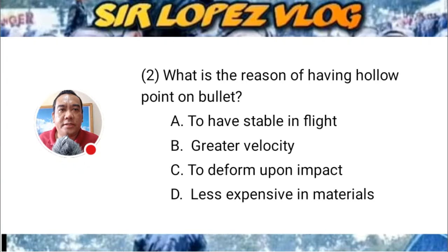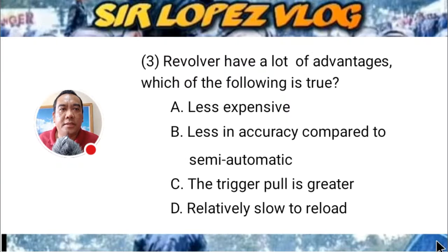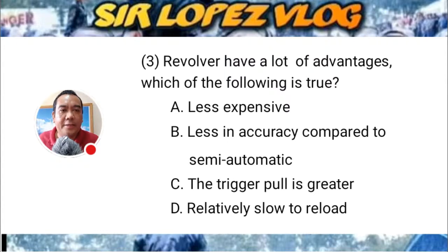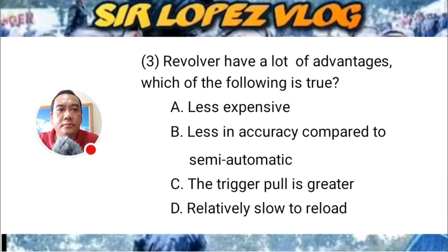Question number three: Revolvers have a lot of advantages. Which of the following is true? A) less expensive, B) less accuracy compared to semi-automatic, C) the trigger pull is greater, or D) relatively slow to reload?